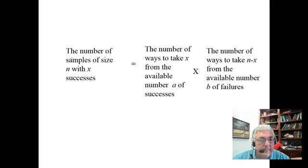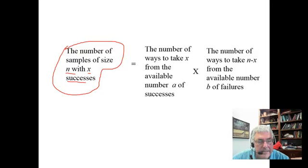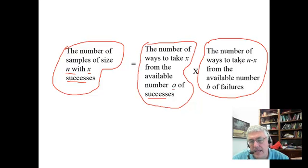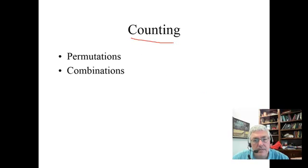The number of samples of size n that have x successes in them: first you would take the number of ways to take x from the available number a of total successes available, and then you would multiply that times the number of ways to take n minus x from the number b of failures. Again, this brings us to counting.